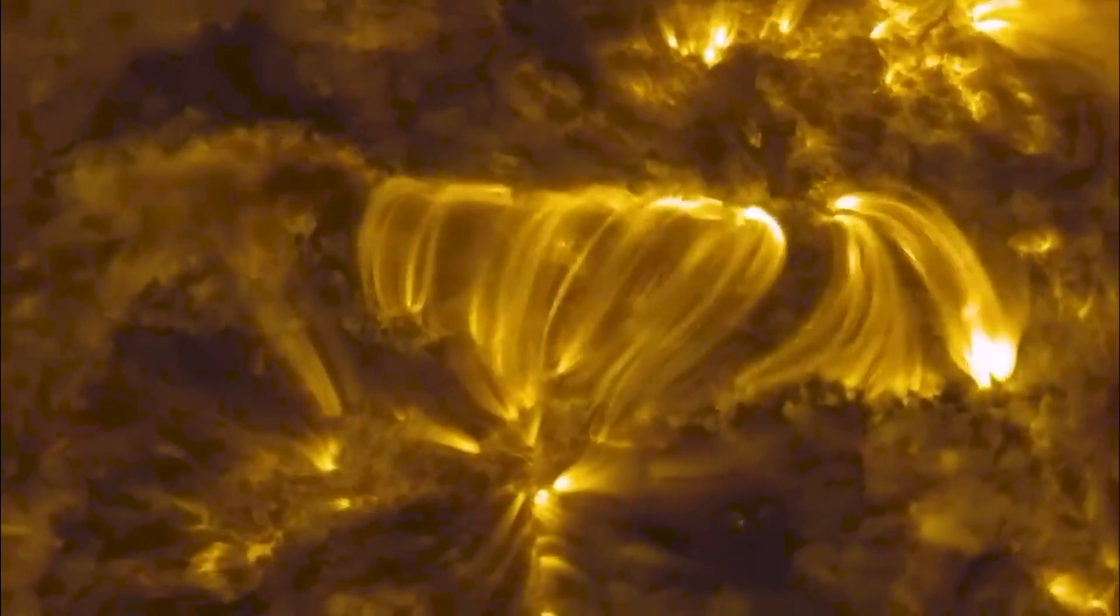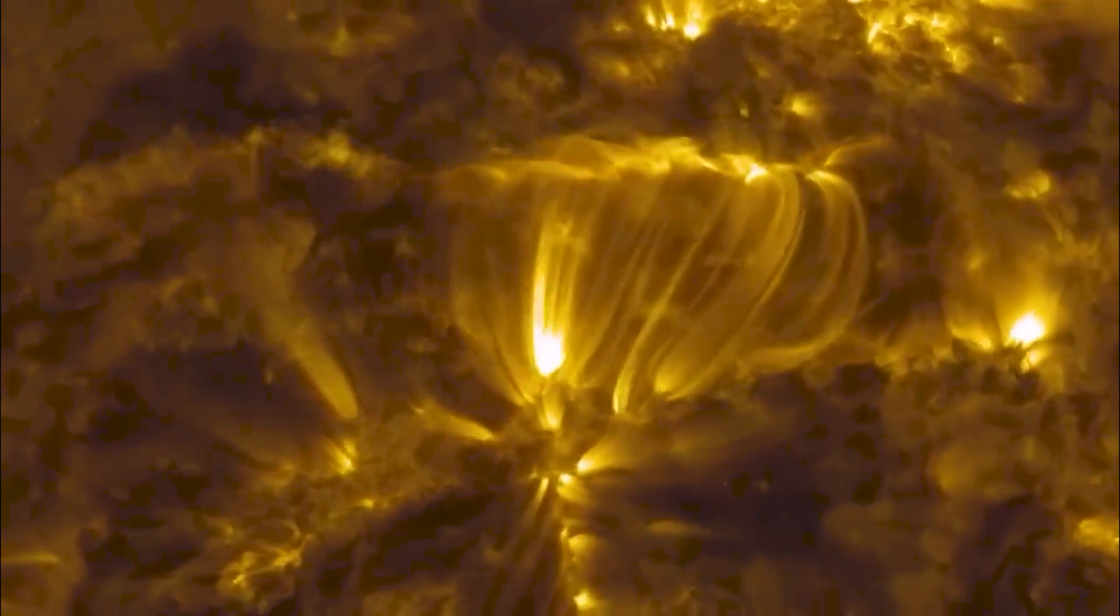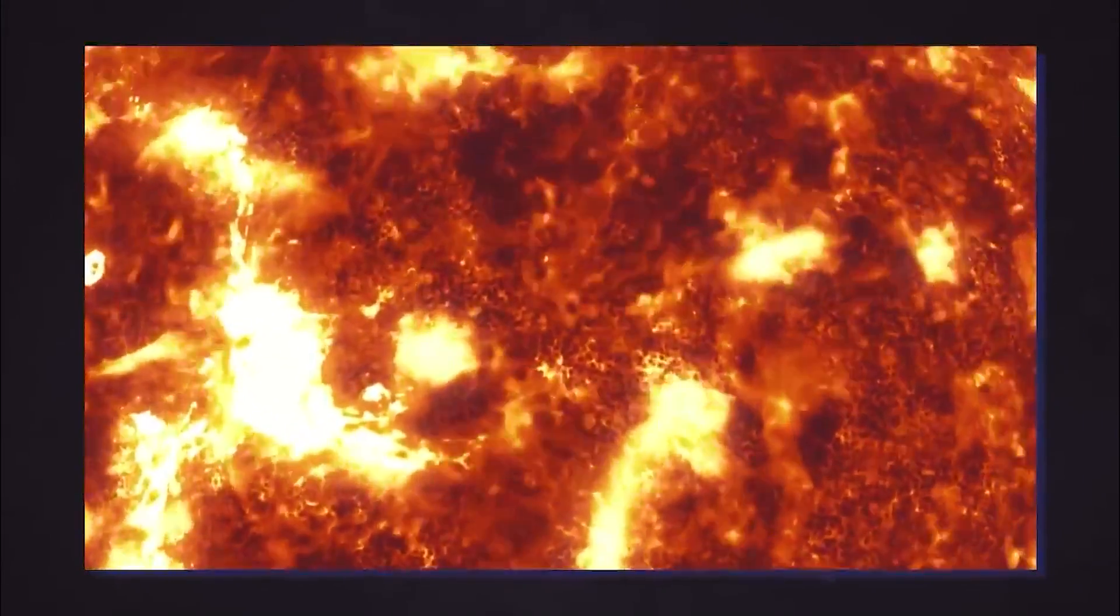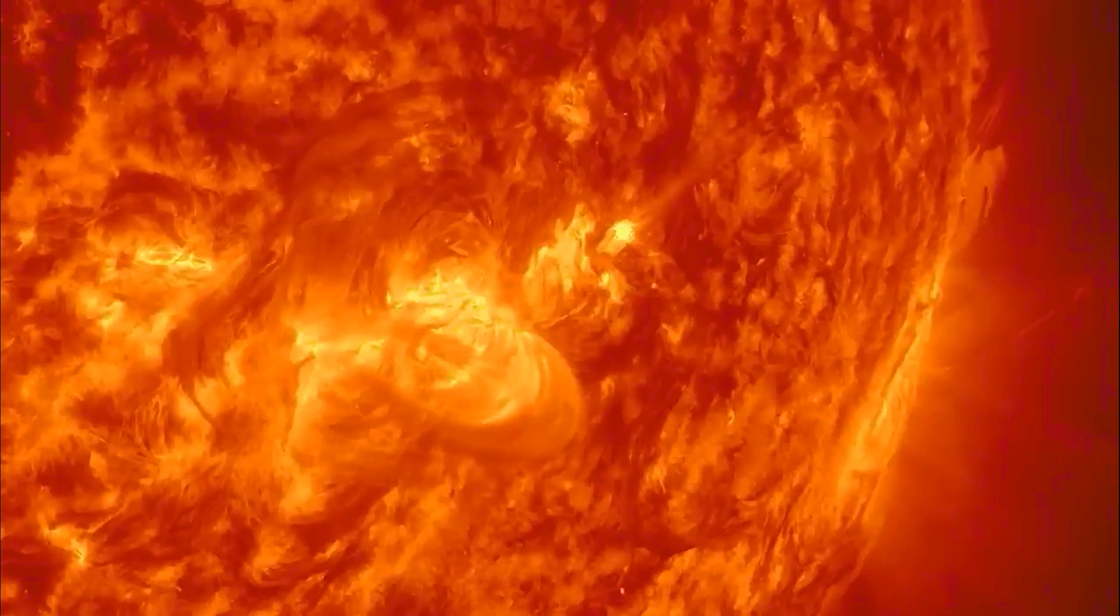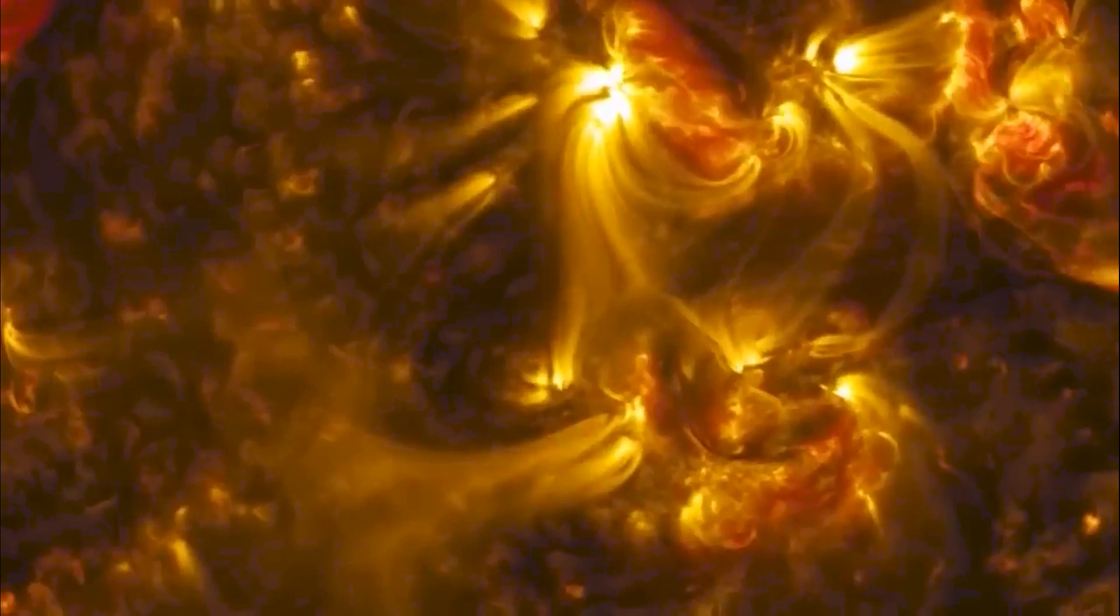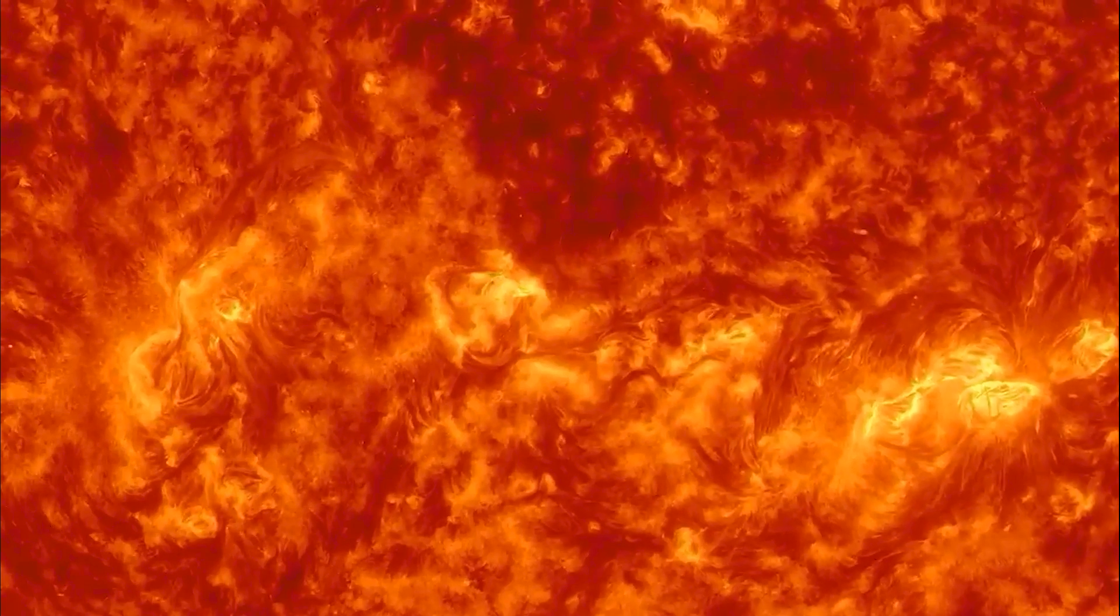Betelgeuse is one of the oldest and brightest stars in our night sky. It's about 8 million years old and forms part of the constellation Orion, one of the most famous constellations visible all over the world. Betelgeuse can be spotted on the right shoulder of Orion, which is why it is nicknamed the Alpha Orionis.